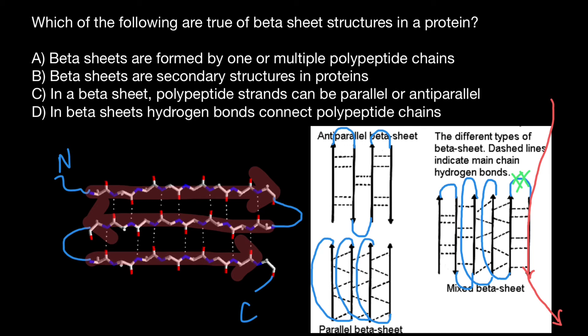Now we can return to our statements. Again, the question is, which of the following are true of beta sheet structure in a protein? In statement A, beta sheets are formed by one or multiple polypeptide chains. And this is true. We can circle this statement as true. Next statement, beta sheets are secondary structures in proteins.